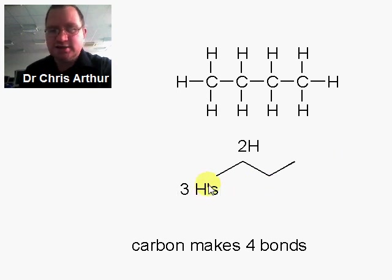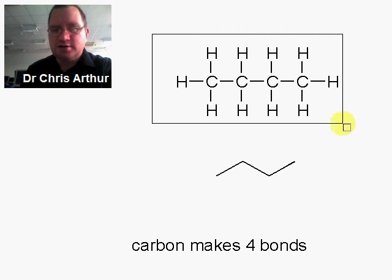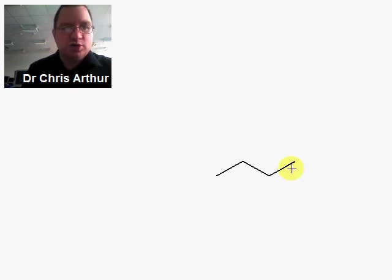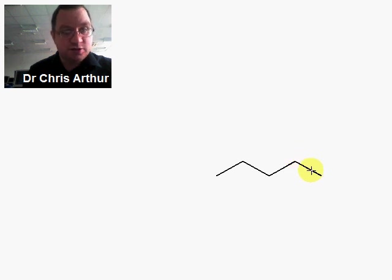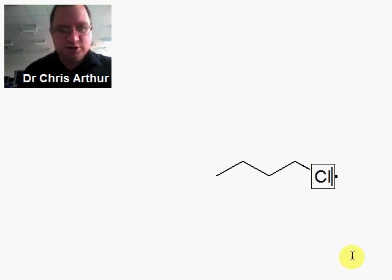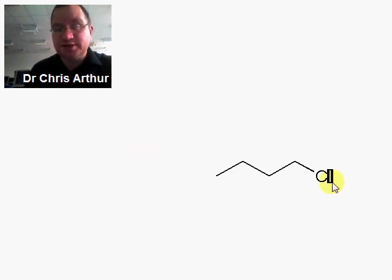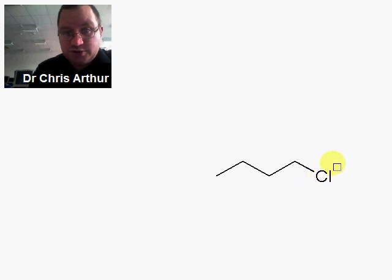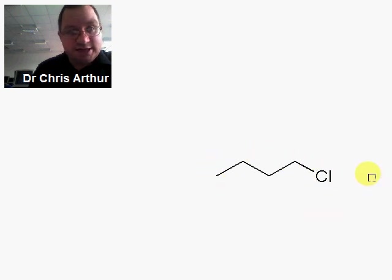Let's extend to more concepts. Carbon can be bonded to elements other than hydrogen. If we want to attach carbon to chlorine, all we do is draw a line — a bond — and write the atomic symbol, in this case Cl.